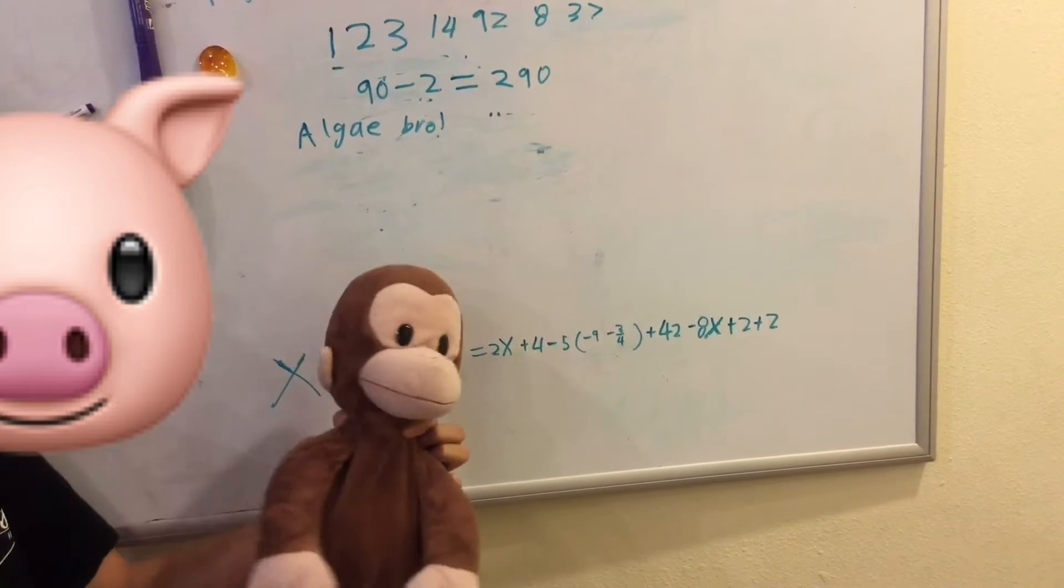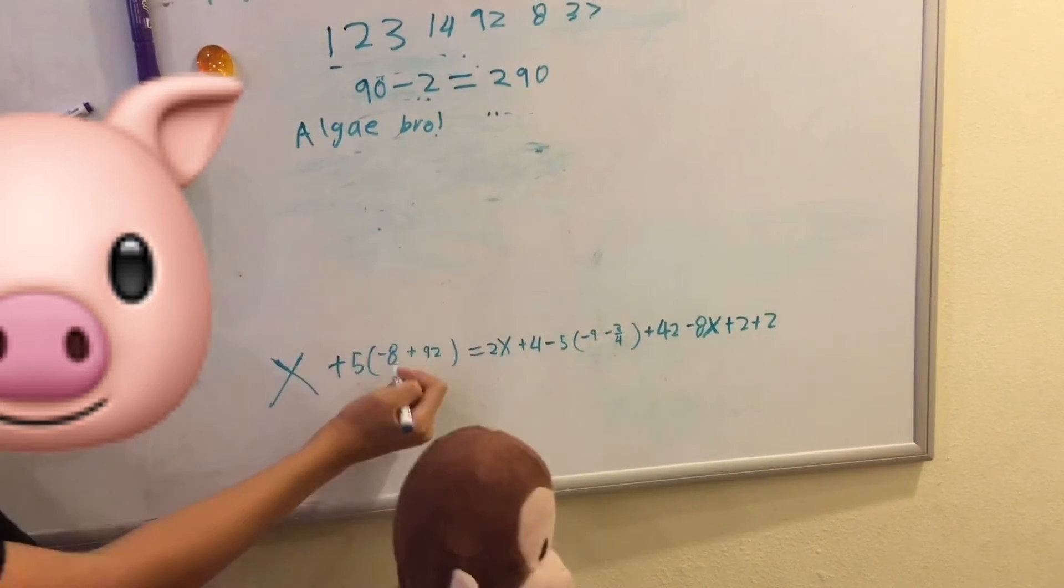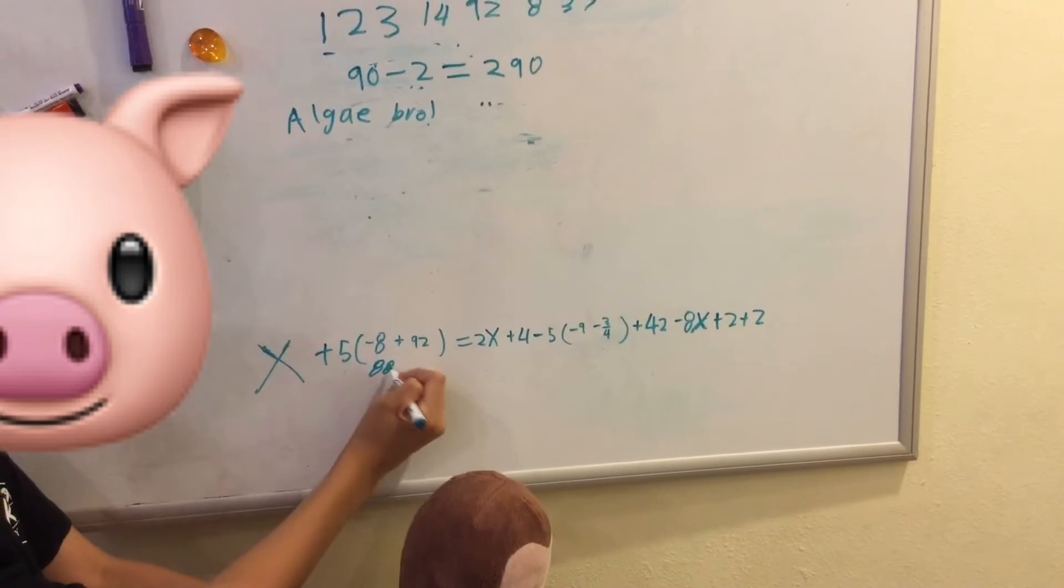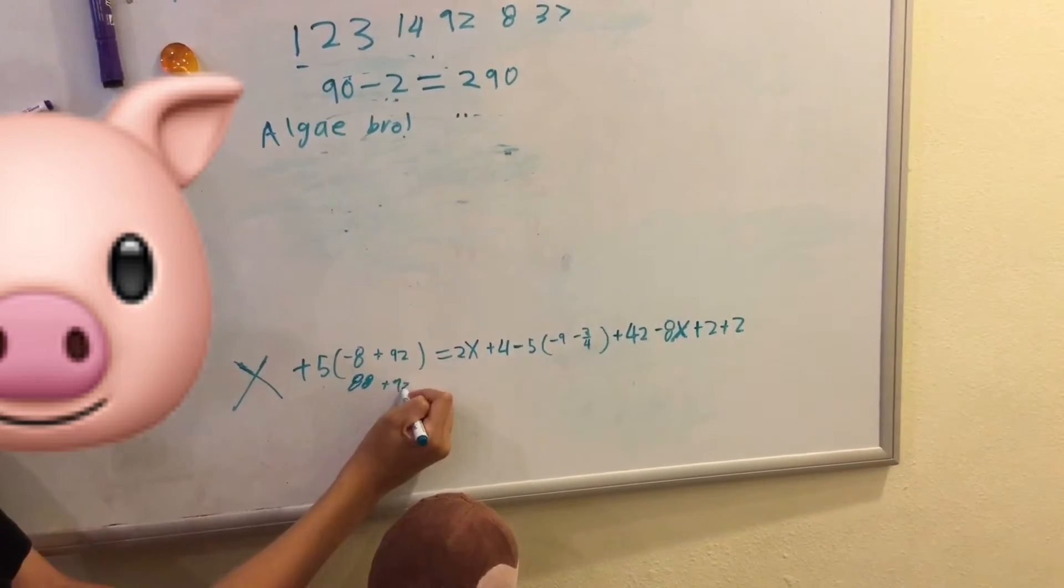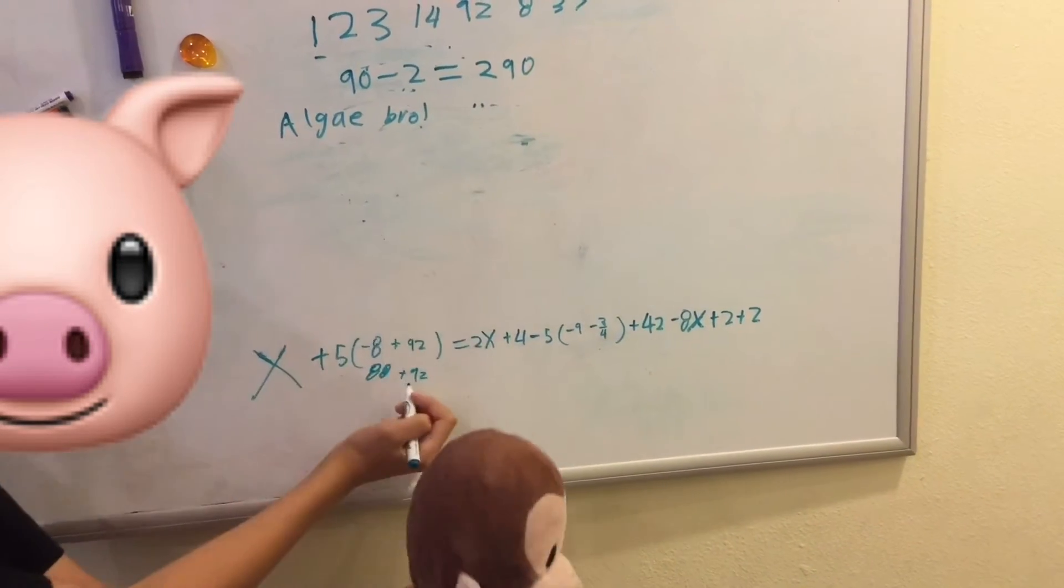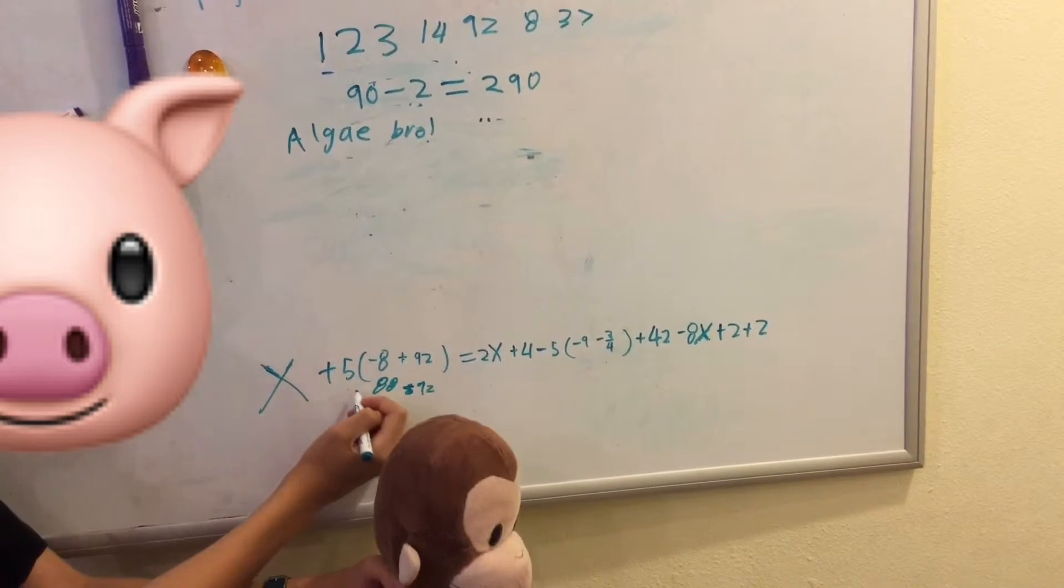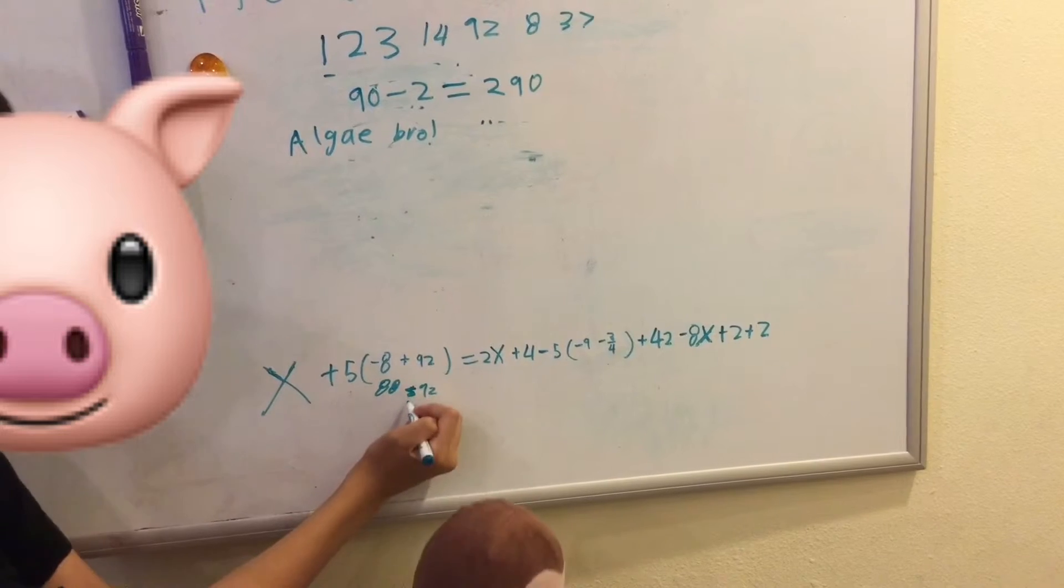Oh yeah, negatives. There's eight letters in negative. So, you just add that to here. So, five times 88 plus 92. 88 plus 92 is 8,892. And five times that is 4.